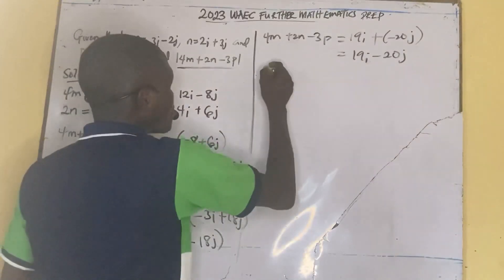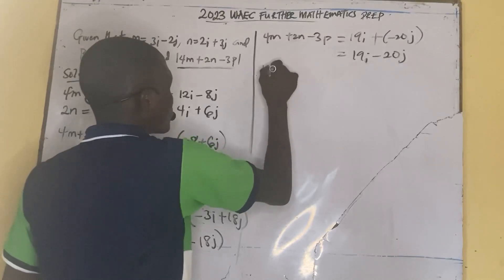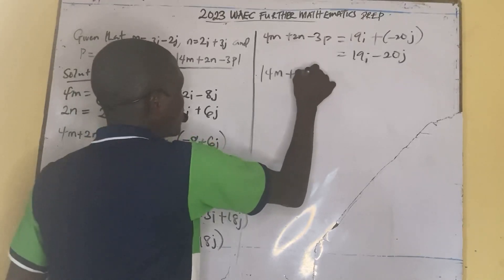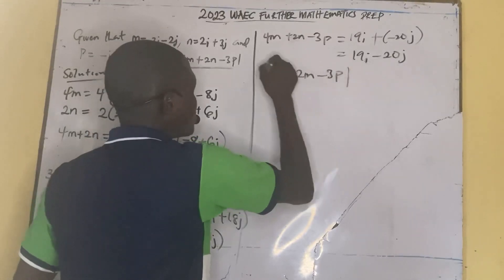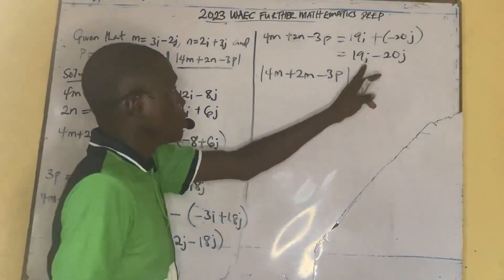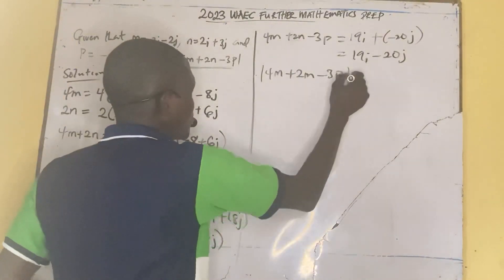So now, find the absolute count. Absolute 4m plus 2n minus 3p, which is the same as the magnitude.